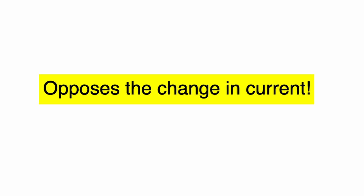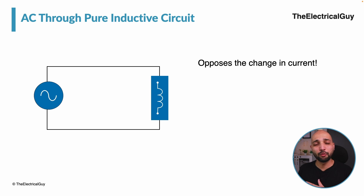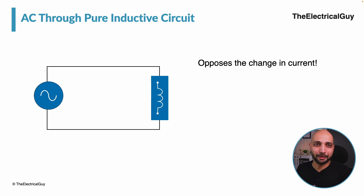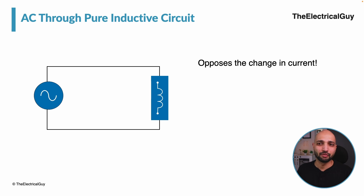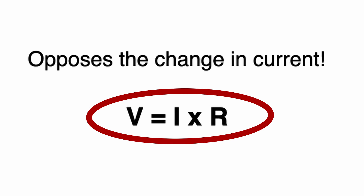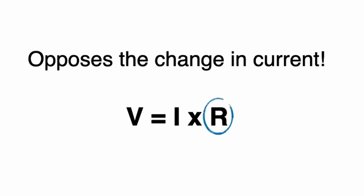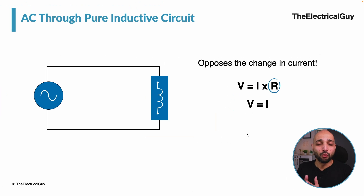What an inductor does is oppose the change in current, and it does so by drawing or supplying voltage that is directly proportional to the rate of change of current. So an inductor tries to maintain a constant current flowing through it. And how can one control current? That takes us back to Ohm's law, which says voltage is directly proportional to current provided resistance is constant — so current is directly proportional to voltage, and one can control current by controlling the voltage.